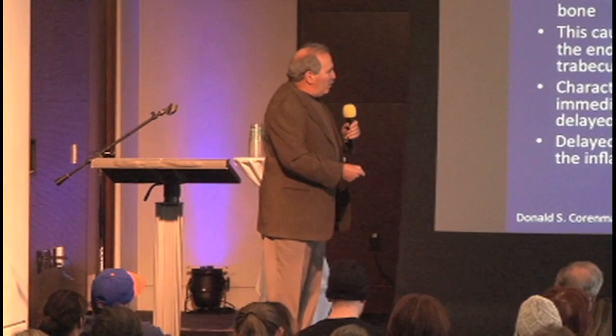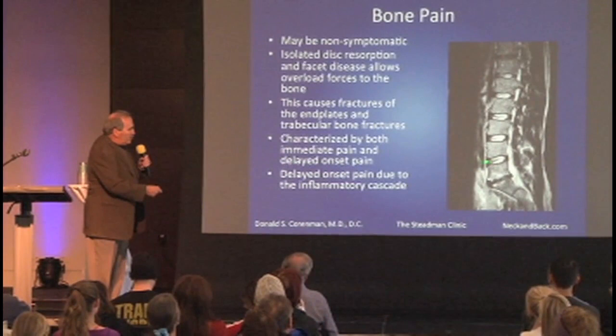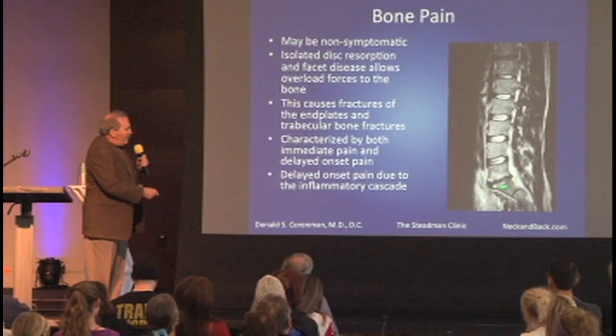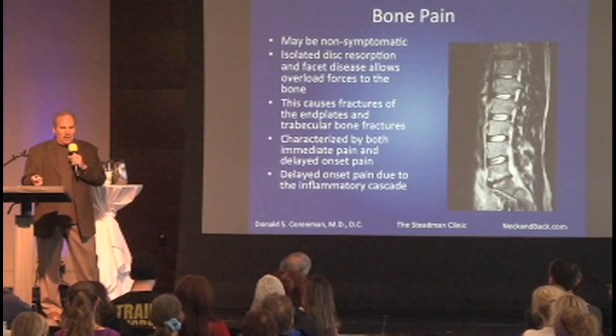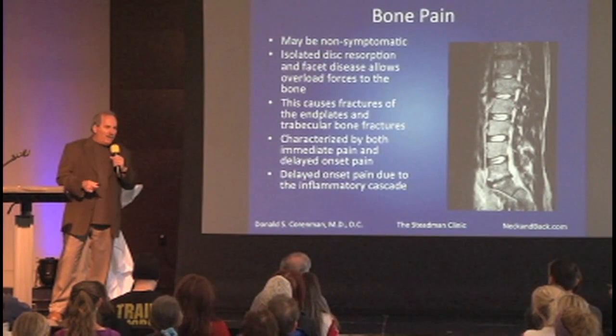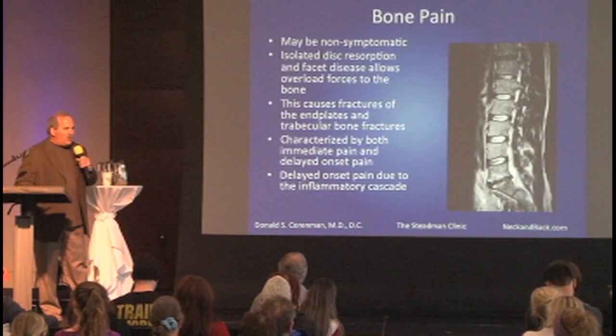One thing those studies didn't address is bone pain. Looking at this spine — normal discs versus abnormal, with fractures and white signal in the bone — this is disc failure called isolated disc resorption, pretty common in our population. Bone pain has two features: a deep, dull ache when you start to load the spine, and a delayed onset pain — I call it pay-for-it-later pain. People do an activity, it hurts at the time, and then six hours later they're miserable because of the inflammatory cascade.